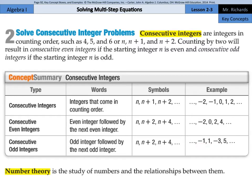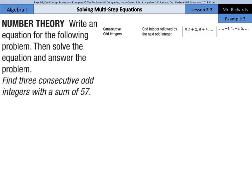Number theory is the study of numbers and the relationships between them. Write an equation for the following problem. Then solve the equation and answer the problem. Find three consecutive odd integers with the sum of 57. Well, before we get into this number theory business here and this rule, I want to take a second to explain why this rule works and what this rule means.